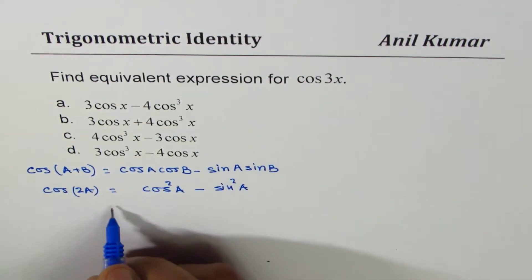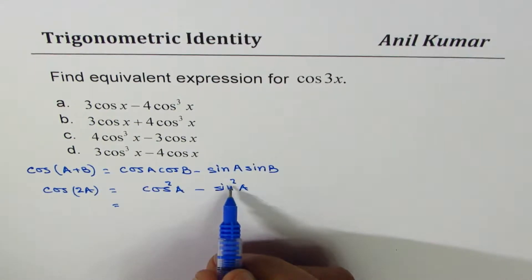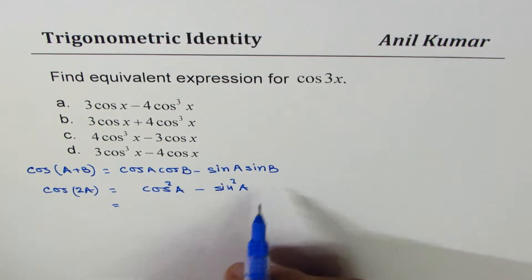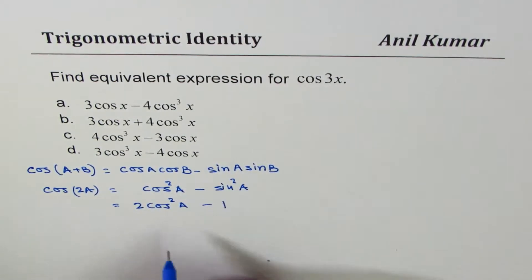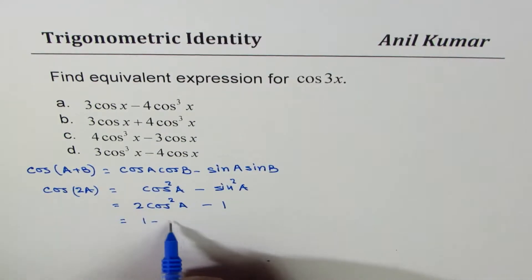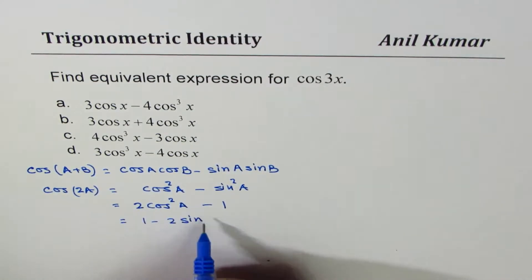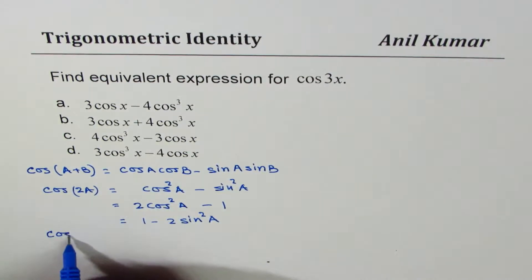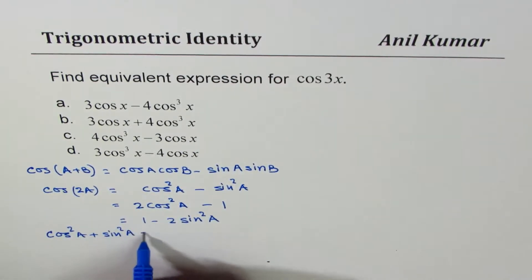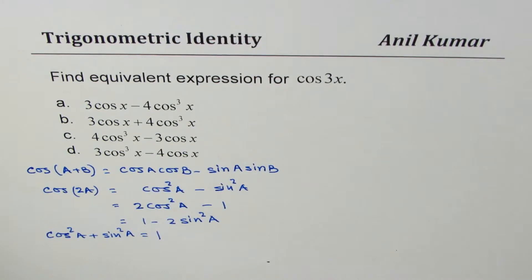If I write sin² a as 1 − cos² a, I get cos 2a = 2 cos² a − 1. This could also be written as 1 − 2 sin² a. And the basic Pythagorean identity is cos² a + sin² a = 1. These are the formulas we're going to use to find an expression for cos 3x.